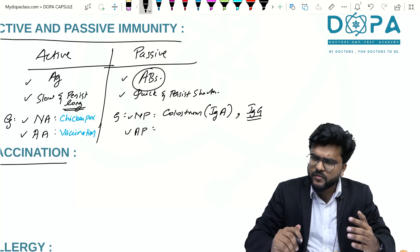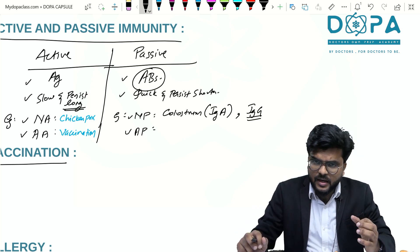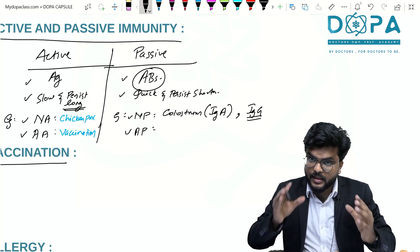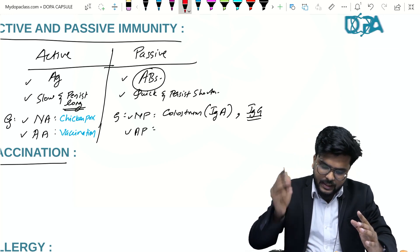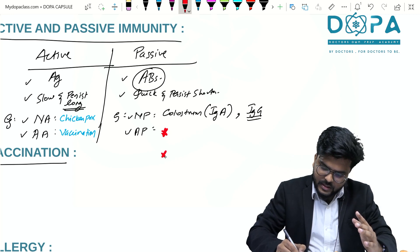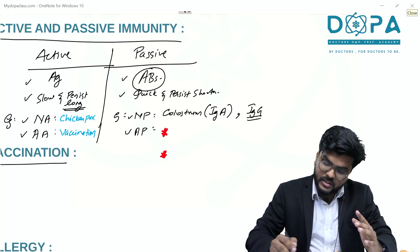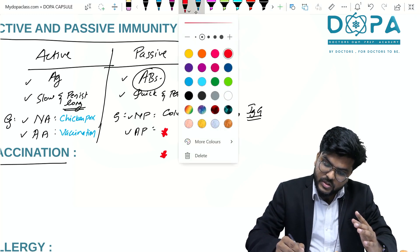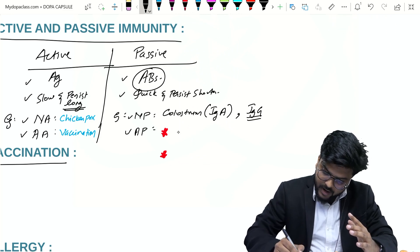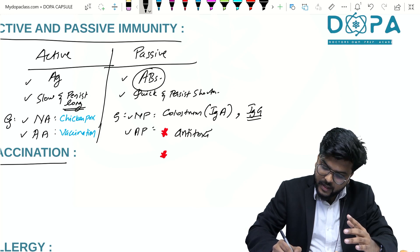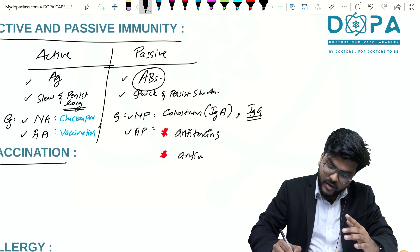For artificial passive immunity, there are situations where we artificially inject certain antibodies into the host organism. These are dangerous situations. The two dangerous situations in which antibodies are artificially injected are: first, the usage of antitoxins, and second, the usage of antivenom.